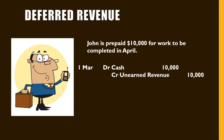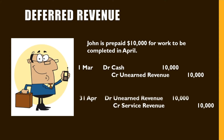John would record on the 1st of March: debit cash, credit unearned revenue. Then, once John has performed his service, the journal entry for the month ending April would be adjusted, debiting unearned revenue and crediting service revenue.